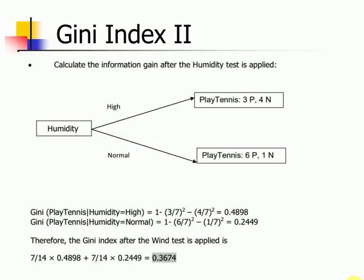Similarly, if you do it for humidity, you will get something of this sort and your net reduction in impurity when we split based on humidity is 0.3674.